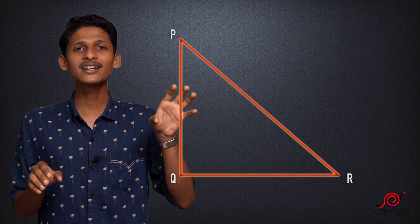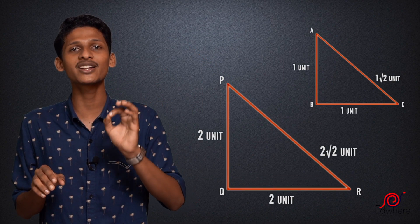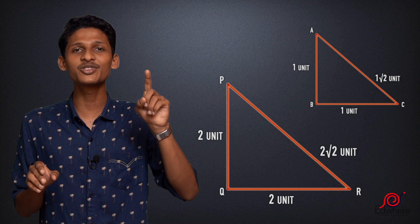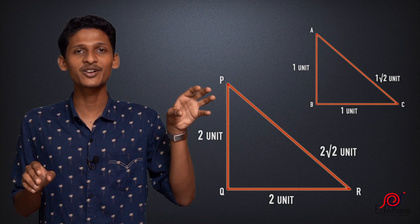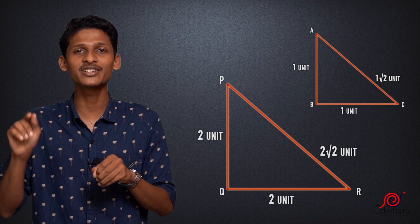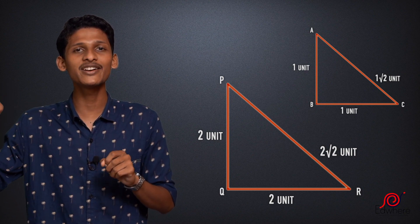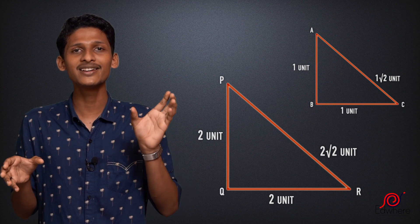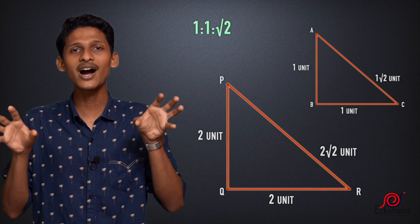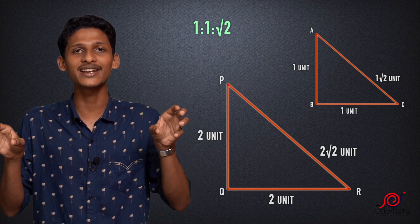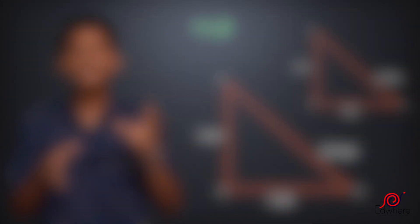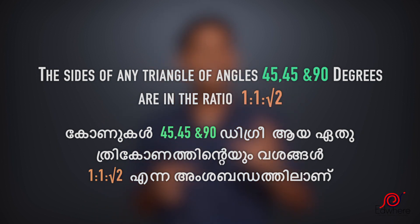Now we compare the two triangles. Looking at the ratio of the sides, both triangles are the same — the sides of the triangle are in the ratio 1 to 1 to root 2. We have the same angles in both triangles. For 45-45-90 angles, the sides are in the ratio 1 to 1 to root 2.